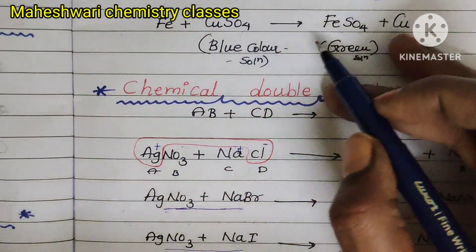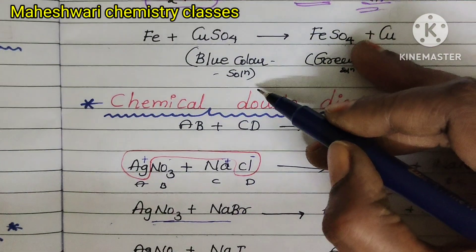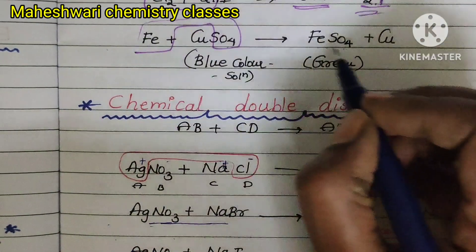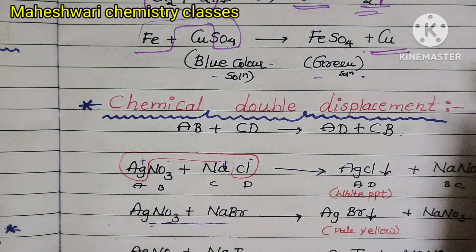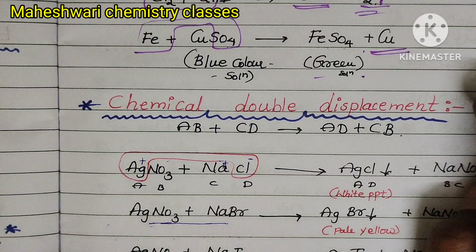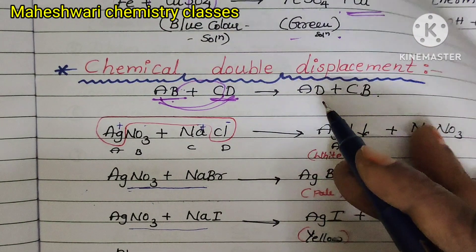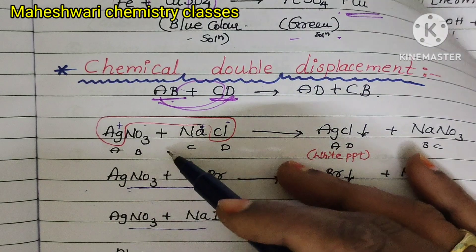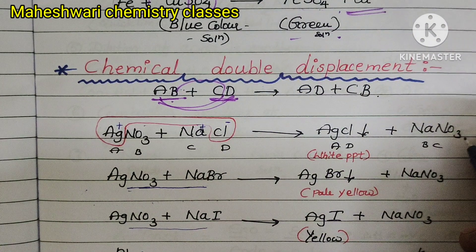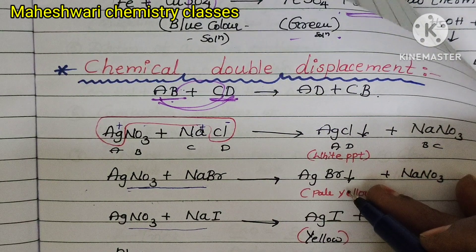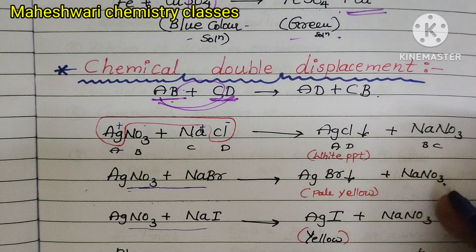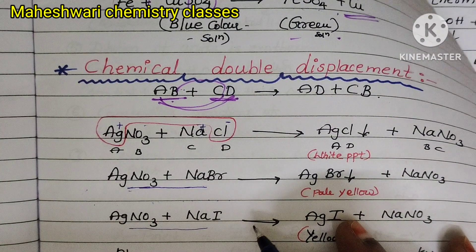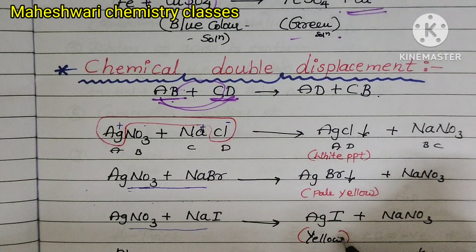When iron reacts with copper sulfate — copper sulfate is blue color — the iron and sulfate combine to form iron sulfate, which is a green color solution, and the remaining copper metal is produced. Next, chemical double displacement: AB + CD gives AD + CB — two types of displacements occur. Silver nitrate reacts with sodium chloride, releasing silver chloride precipitate and sodium nitrate. Silver nitrate reacts with sodium bromide, releasing silver bromide precipitate and sodium nitrate. Silver nitrate reacts with sodium iodide, releasing silver iodide and sodium nitrate.